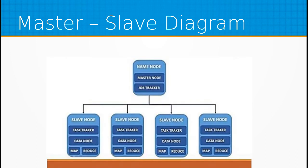For example, the NameNode, the Secondary NameNode, and the JobTracker need not have a very high hard drive storage space, whereas your DataNodes will be very high in terms of hard drive storage space, because they are the ones which actually bear all the data loads. All your big data storage is going to happen on these DataNodes, which bear the bulk of the data operations.